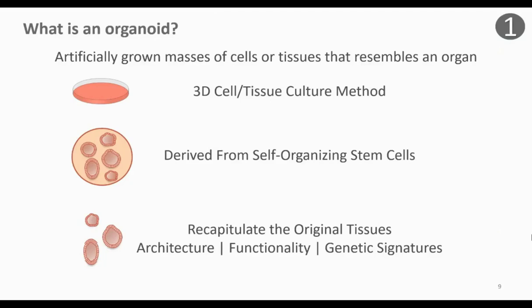Organoids are typically embedded in a 3D matrix to provide support. This can be a natural ECM-based hydrogel, or extracellular matrix hydrogel, which is typically derived from mouse sarcoma cells — examples of products include Matrigel or Geltrex. Or they can use more synthetically derived hydrogels. Many studies have shown how organoids can reproduce the in vivo architecture, some of the functions, and the genetic signatures of the original tissues.